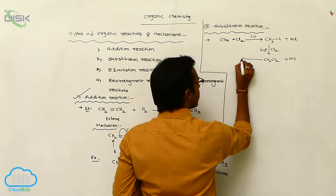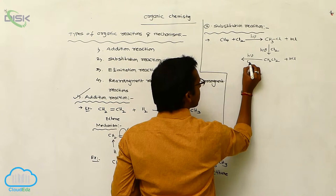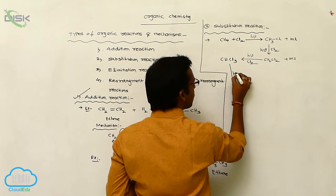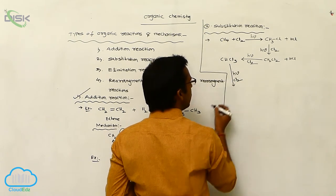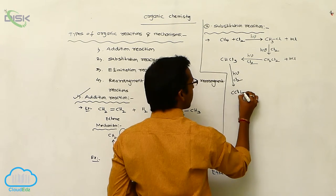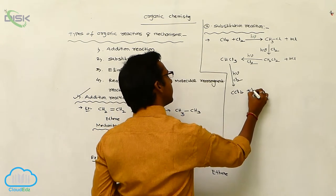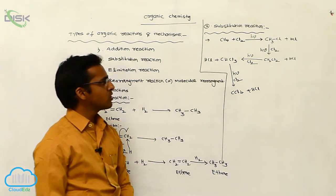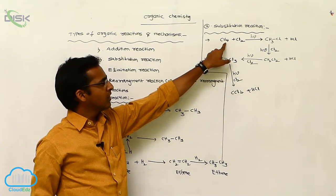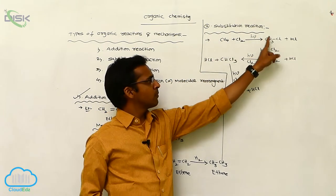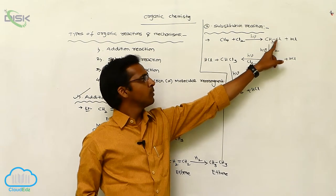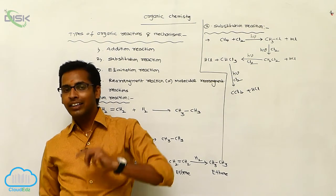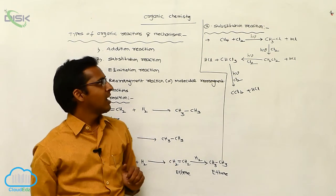The same process continues: under photochemical conditions, addition of Cl2 converts CH2Cl2 to CHCl3, and further chlorination gives CCl4, each step releasing HCl. Thus four hydrogen atoms are progressively replaced by chlorine. The atom or group replaced by another atom or group — this is called substitution reaction.